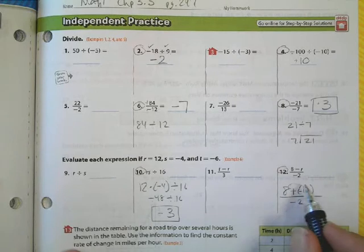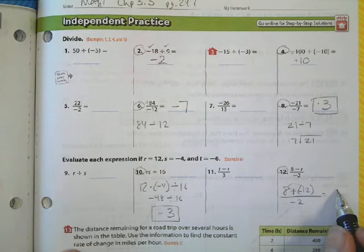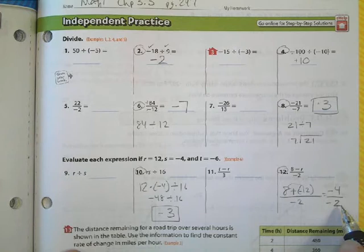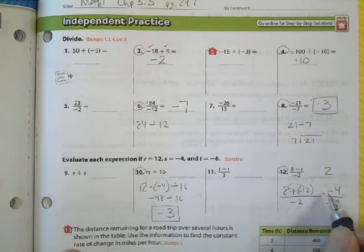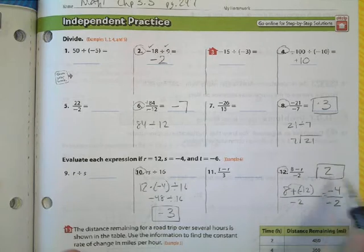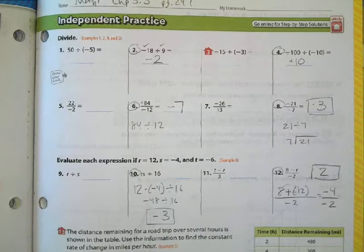The signs here are different, so I find the difference, which happens to be 4, keeping the large opposite value negative 4. So negative 4 divided by negative 2. Well, 4 divided by 2 is 2, and because the signs are the same, I keep that as a positive answer, positive 2, for number 12.